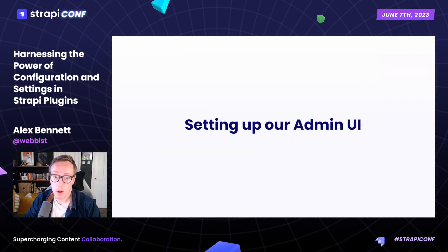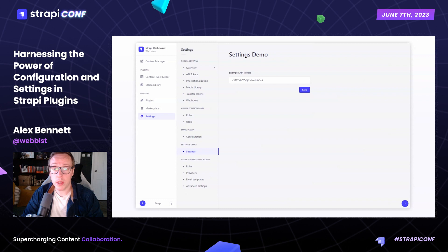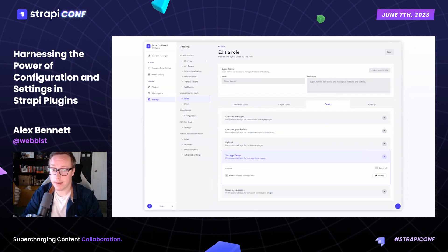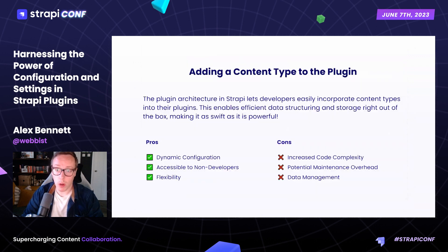Now that we have our content type in place, it's time to set up the admin UI for our plugin settings, allowing users to easily manage and configure settings through a user-friendly interface. By leveraging the Strapi design system, we effortlessly achieve a unified and professional look across our settings page, giving users an intuitive and seamless experience. Also in our plugin, if we edit our server's bootstrap file, we can introduce permissions to the content type and register it with Strapi's admin services. This protects our plugin settings and integrates the plugin directly into Strapi's UI, making it visible under the plugin permissions — keeping your plugin settings secure while also being easily manageable.